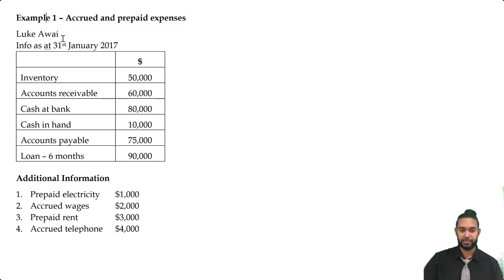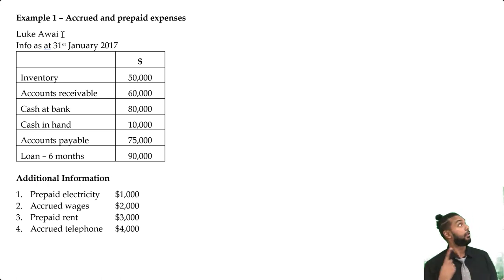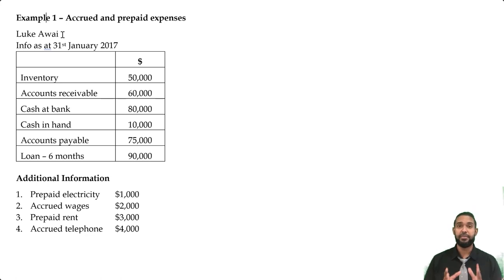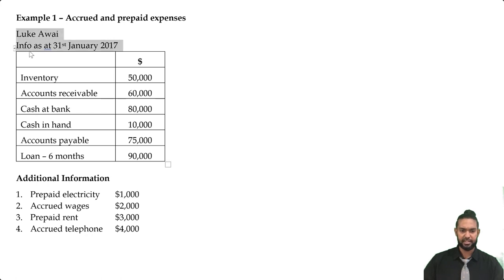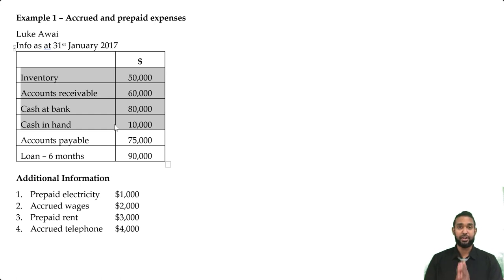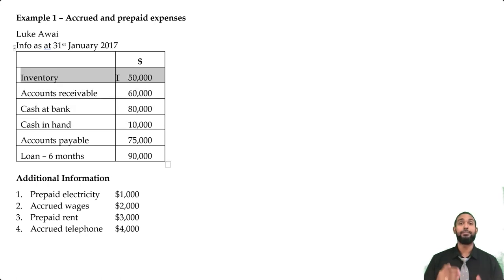Here we have example one on accrued and prepaid expenses. I have a more in-depth video on that topic linked in the description. What we're looking at now is where to put these items on the balance sheet — the statement of financial position. Luke Awai's info as at 31st January 2017 shows inventory (also known as stock), accounts receivable (also known as debtors), cash at bank, and cash in hand — the four basic current assets from my previous video.